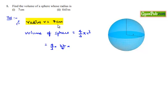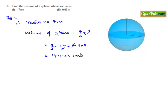And r³ is r × r × r, that is 7 × 7 × 7. Here 7 cancels one time, giving us 1437.33 centimeter cube.